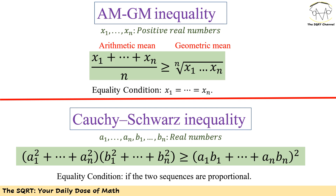The first one is the AM-GM inequality. We have positive real numbers x₁ up to xₙ, and we say that the arithmetic mean is greater than or equal to the geometric mean — that is, the sum of xᵢ from i=1 to n, divided by n, is greater than or equal to the nth root of x₁ times x₂ up to xₙ. The equality holds when x₁ = x₂ = ... = xₙ.